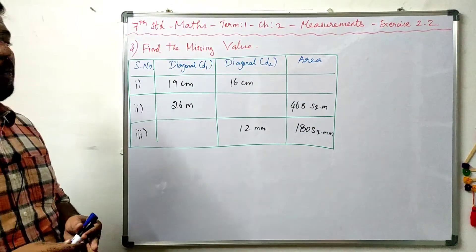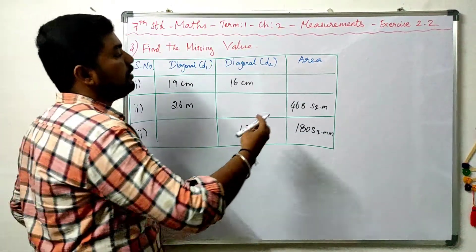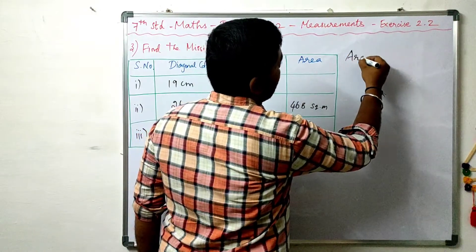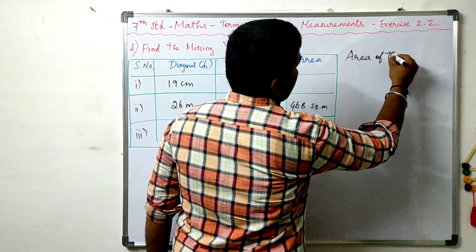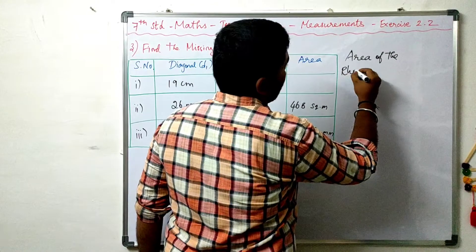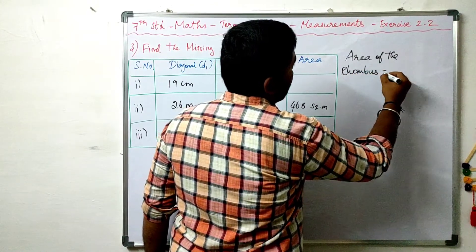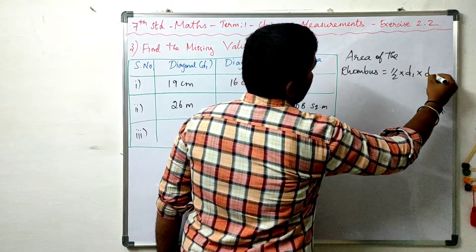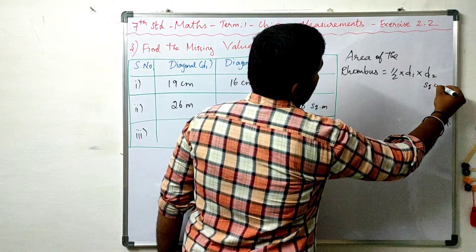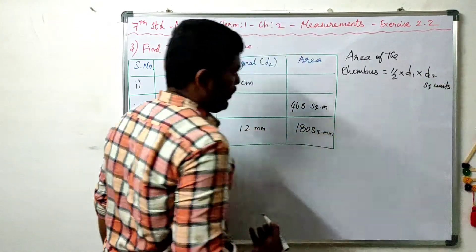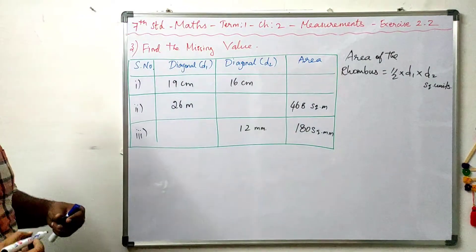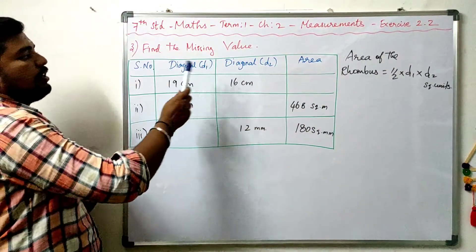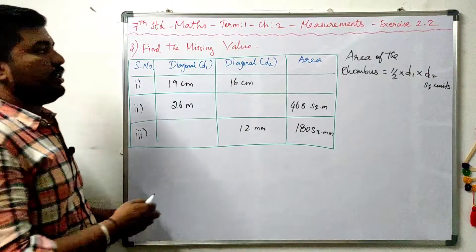Now we have a table to fill. First, we have the formula: area of the rhombus when diagonals are given is equal to half into D1 into D2 square units. Looking at the first entry: diagonal 1 = 19 cm, diagonal 2 = 16 cm.